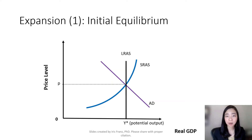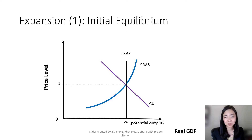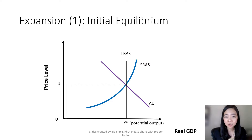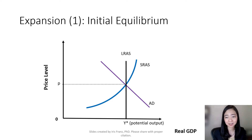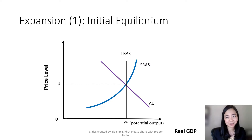Next, we're going to use our aggregate demand and aggregate supply model to analyze an economic expansion. We start with our initial equilibrium at the intersection of long-run aggregate supply, short-run aggregate supply, and our aggregate demand curve. Our output is at potential output, so there is no cyclical unemployment.